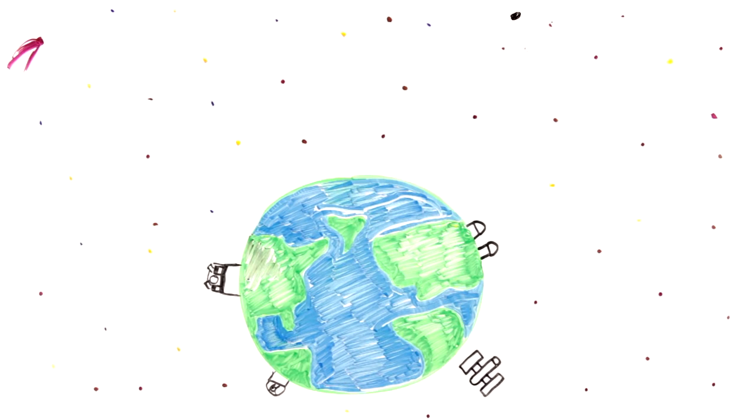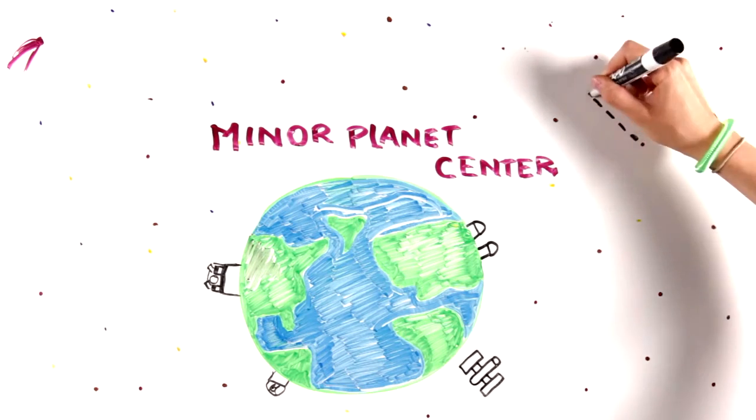When they find a near-Earth object, they send its information to the Minor Planet Center, which keeps track of its orbit.